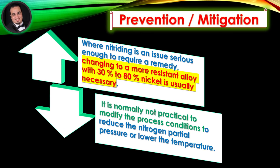Prevention and mitigation: Where nitriding is an issue serious enough to require a remedy, changing to a more resistant alloy with 30% to 80% nickel is usually necessary. It is normally not practical to modify the process conditions to reduce the nitrogen partial pressure or lower the temperature.